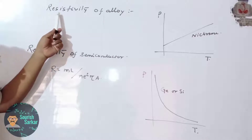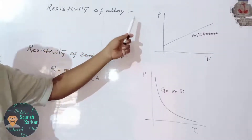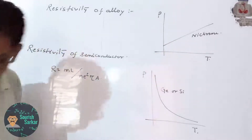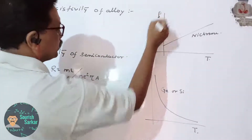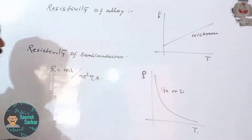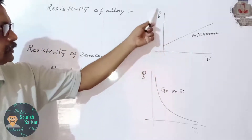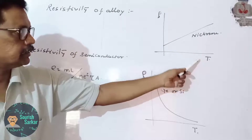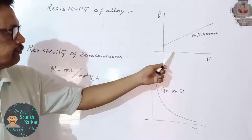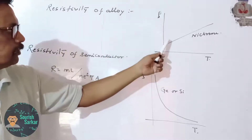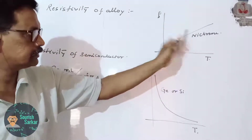Today we are going to discuss resistivity of alloys and how it varies with temperature. Here is the graph showing the variation of resistivity rho with temperature T for nichrome wire. We can see that as the temperature increases, the resistivity of the alloy slowly increases and it increases linearly.